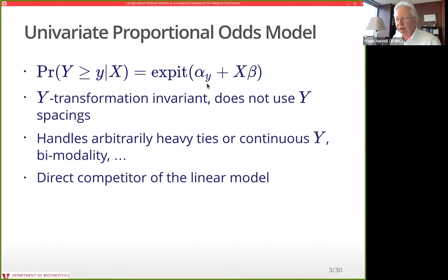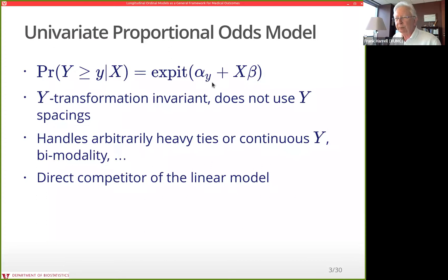The binary logistic model has only one intercept, whereas for the ordinal model we have as many intercepts as distinct y values minus one. We state the cumulative probability — P(Y ≥ y | X) — as one over one plus e to the minus quantity of the intercept at the y threshold plus the ordinary linear predictor. The y index is on the intercepts. This is analogous to the Cox proportional hazards model, which just uses a different link function.